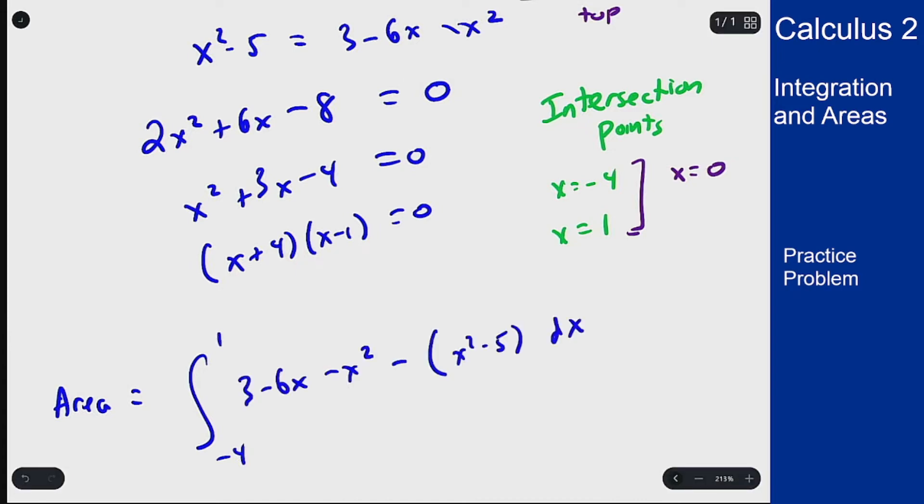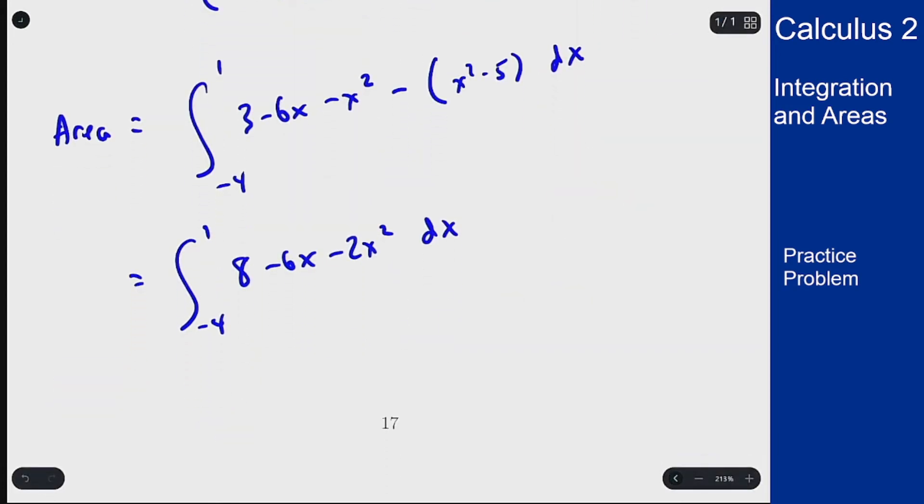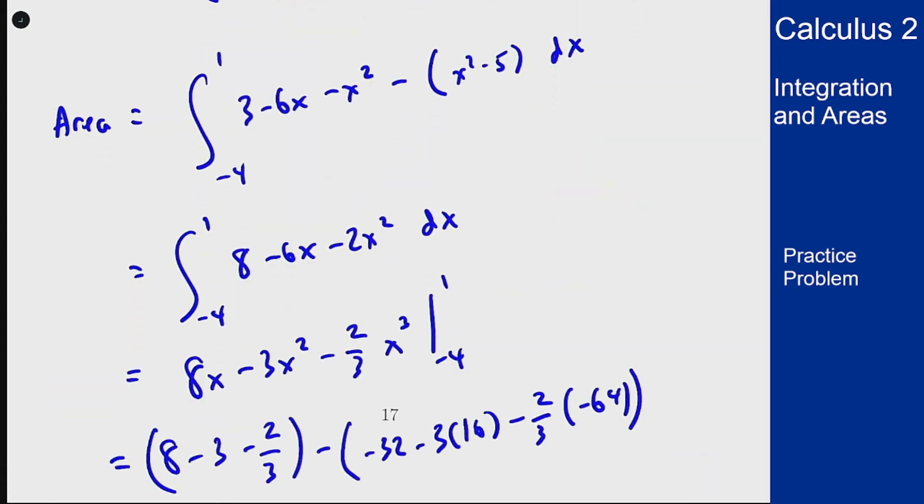We can cancel a bunch of minus signs. This evaluates to 5 minus 2 thirds for the first term, 32 plus 48 which is 80 minus 128 over 3.